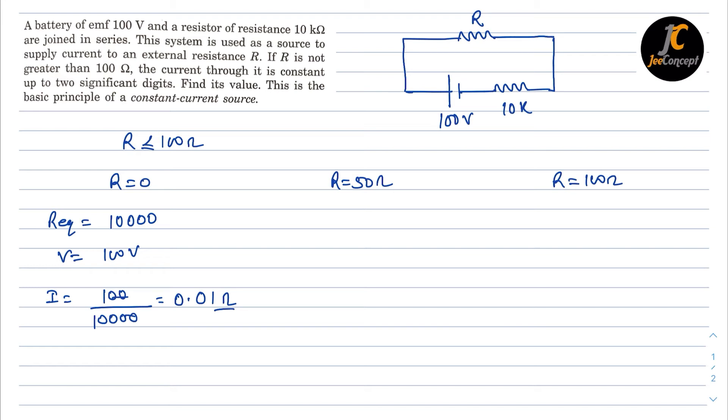For the second part, the R is 50 Ω. So R equivalent will become, so this 50 Ω will be added to 10 kΩ. So that means it is going to be 10,050. The V is 100 volt.